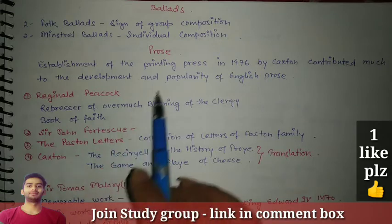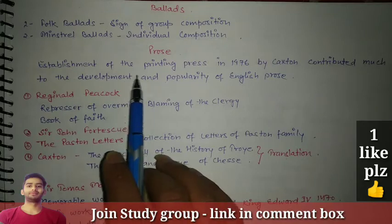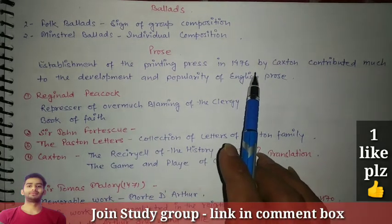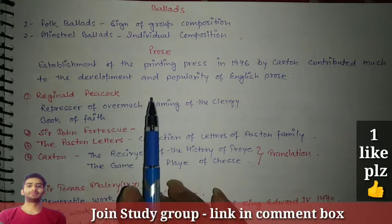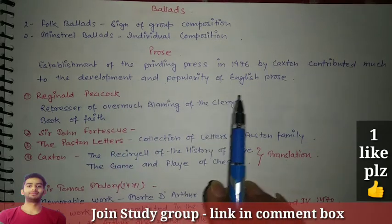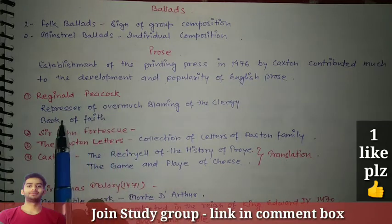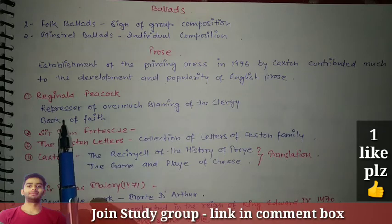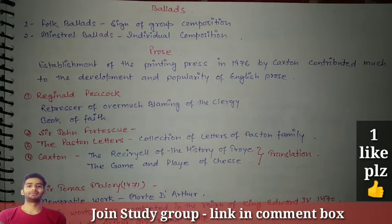Now let's talk about prose. The establishment of the printing press in 1476 by Caxton contributed much to the development and popularity of English prose. The first writer was Reginald, who was a repressor. He wrote works including 'Repressor of Overmuch Blaming of the Clergy' and 'Book of Faith.'